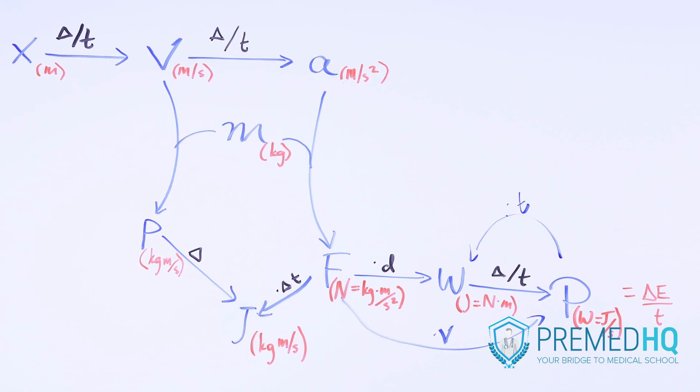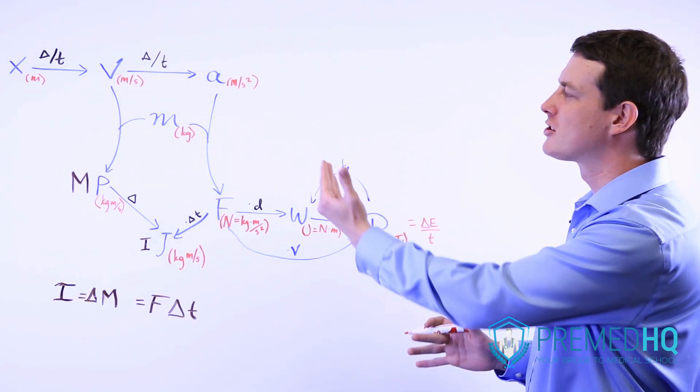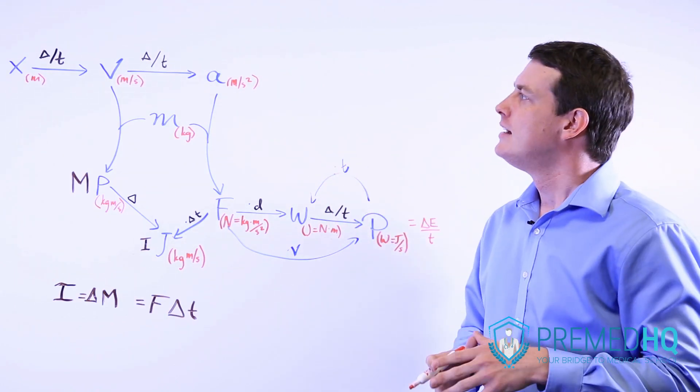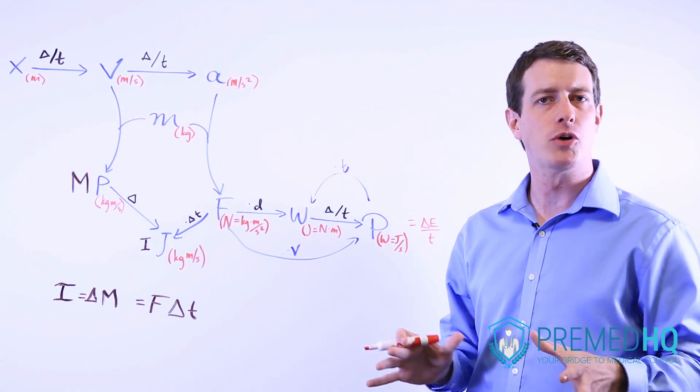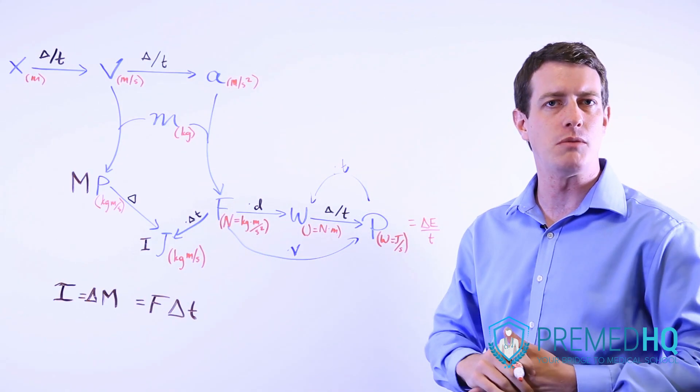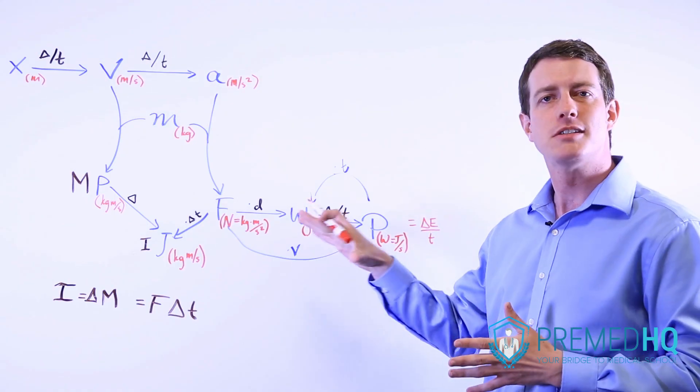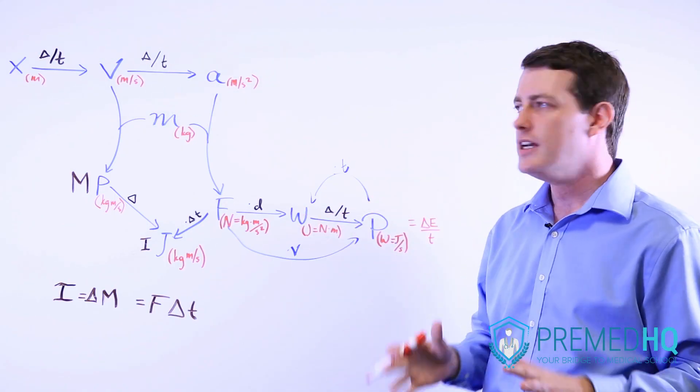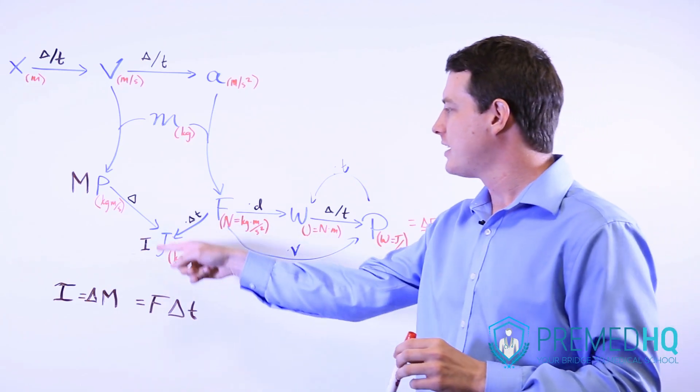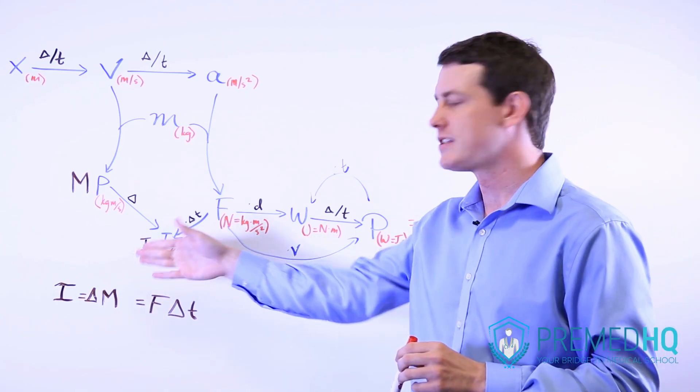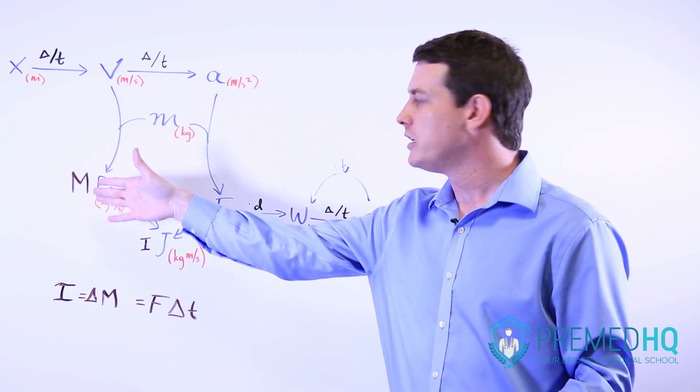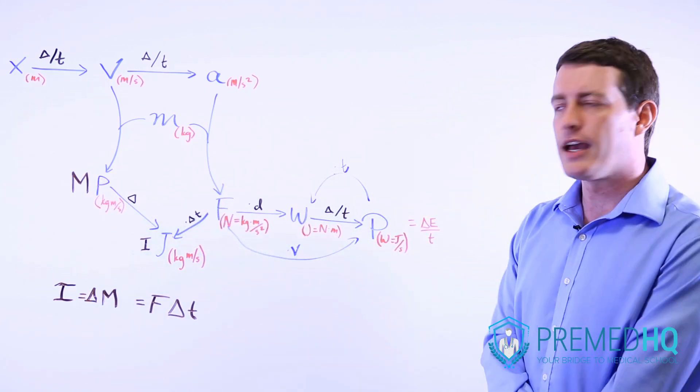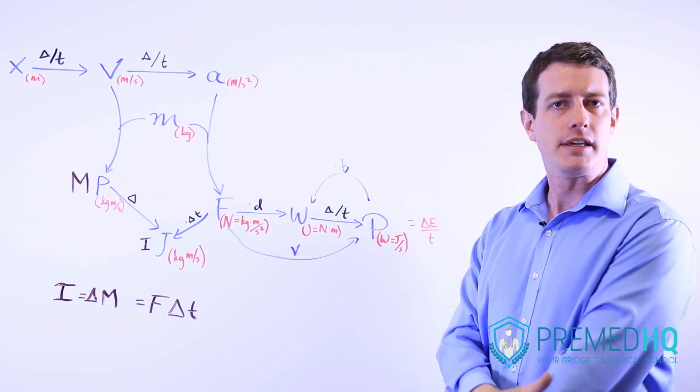The last thing before we move on to how to use this chart to help analyze some graphs is that oftentimes it's the impulse and momentum formulas that cause students the most trouble. And I found a fairly simple way to just commit this to memory. It involves changing, instead of using the unit J for impulse, instead just to use a capital I, and instead of using P for momentum, you just use a capital M.